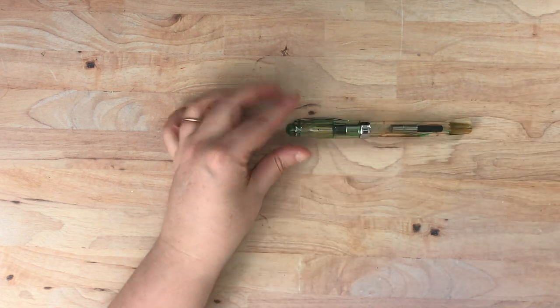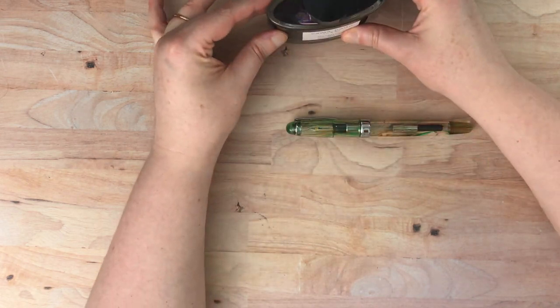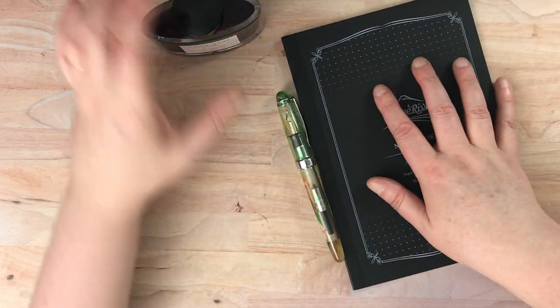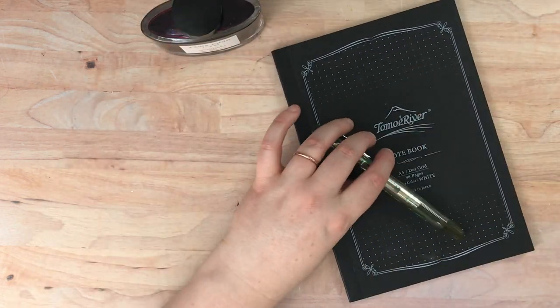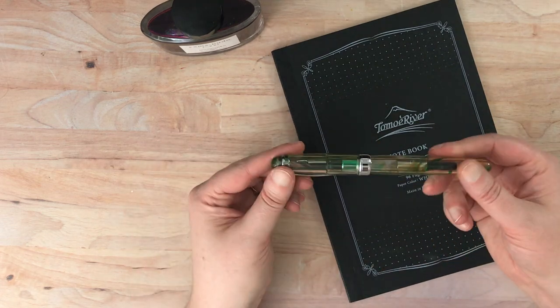And then I do have my trusty Yamabudo ink off here to the side and a notebook. So my thought was that I would dip test this pen just briefly. And I do have a napkin over to the side to get the ink out when I'm done.